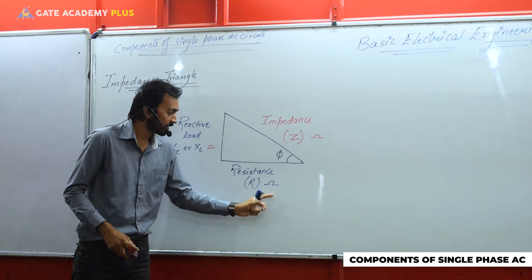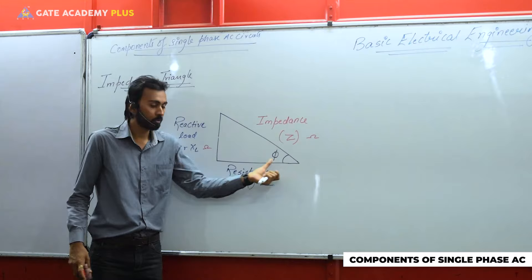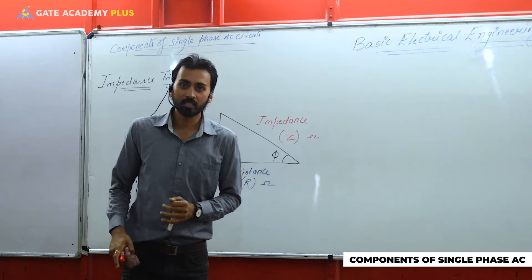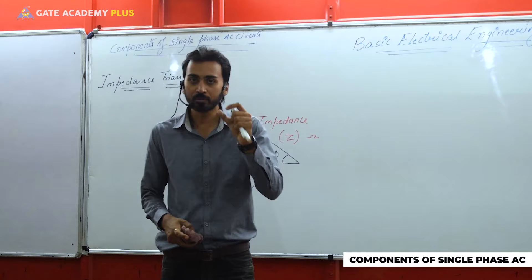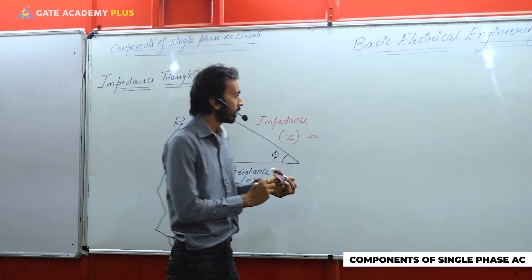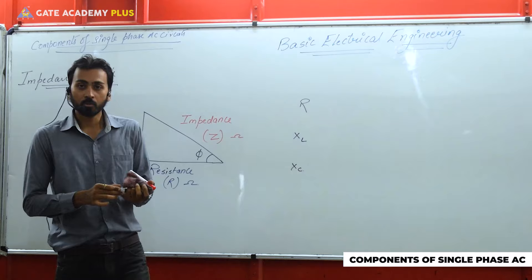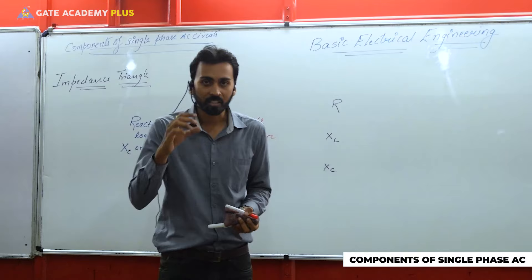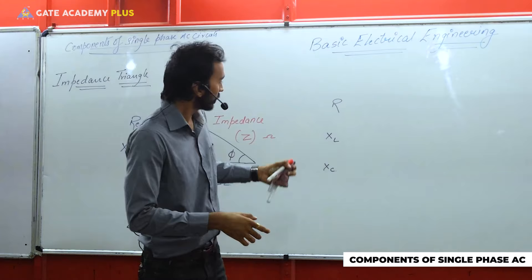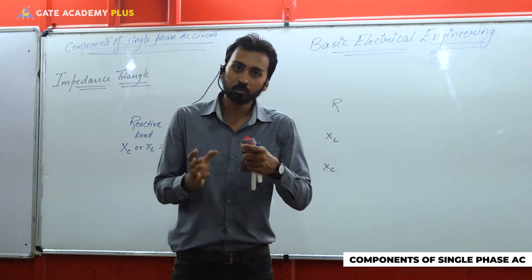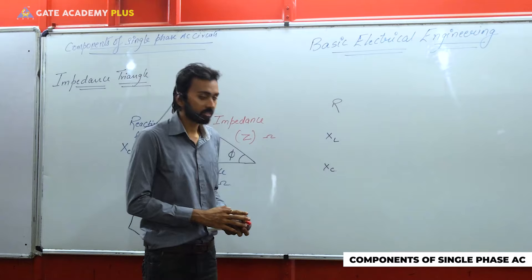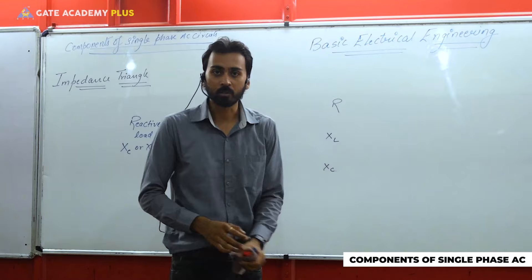Phi is the phase difference angle. The reason the resistive part is on the base and the reactive part on the perpendicular can be understood by reviewing our analysis of AC circuits. We studied three types of loads: resistive load, and reactive load (which includes XL and Xc). The analysis covers two things: first, the relation between current and voltage due to a particular load; second, the value of power dissipated in the circuit for any of these loads.